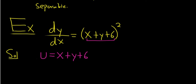Now we're going to take the derivative of both sides with respect to x. So we have du/dx equals, well, dx/dx is 1 plus dy/dx. And then the derivative of 6 is simply 0.